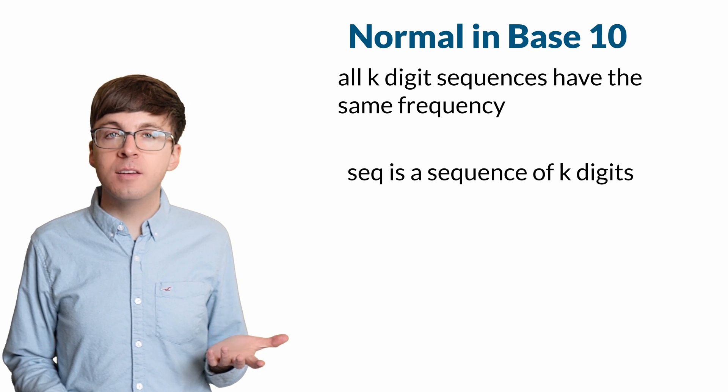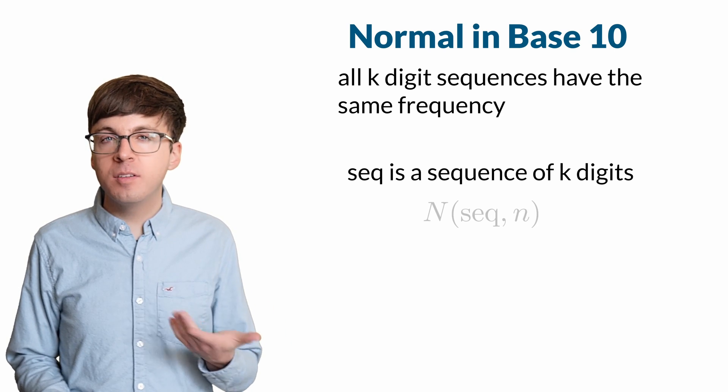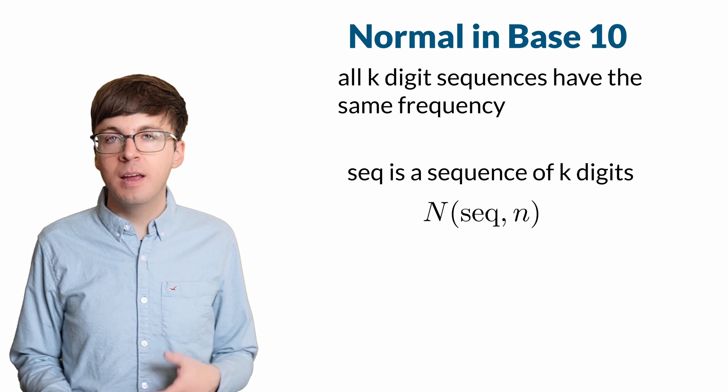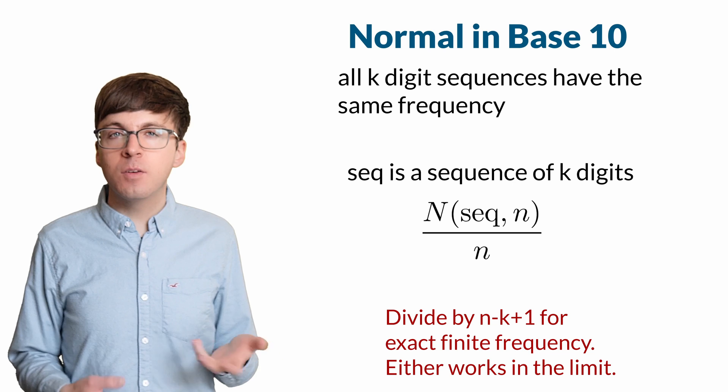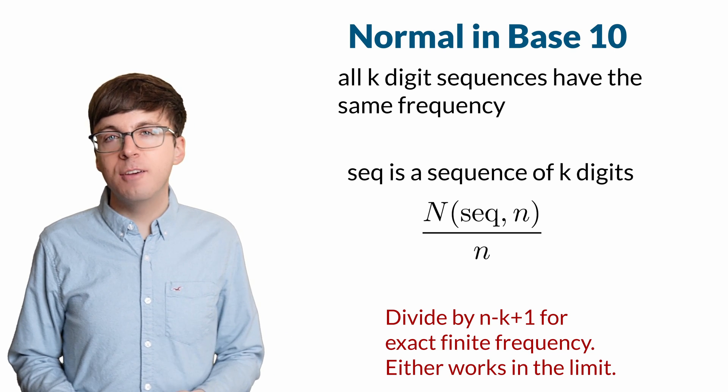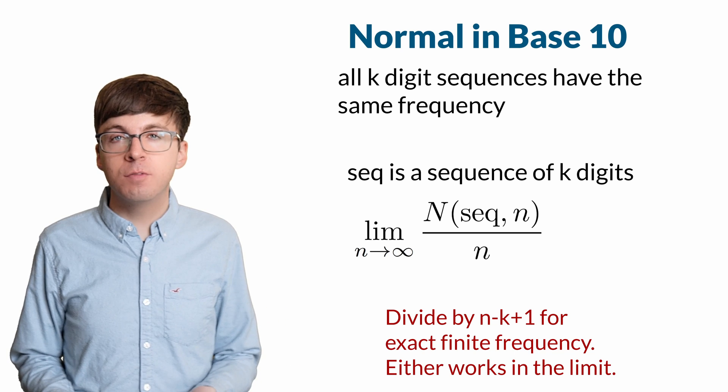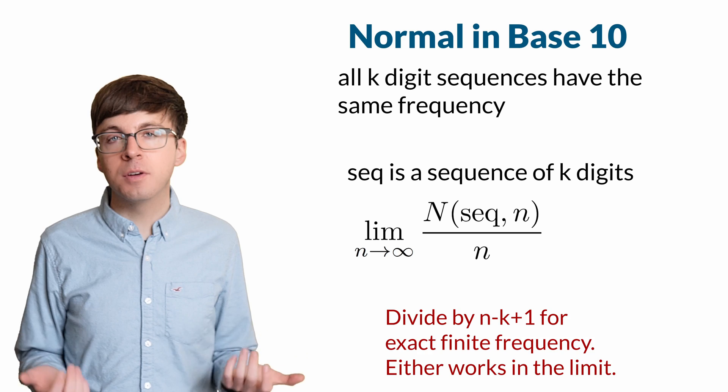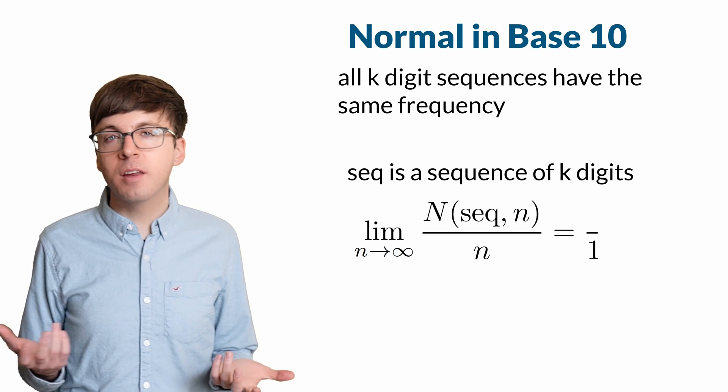Say we have a sequence of k digits. If we count how many times the sequence shows up in the first n digits of the number and divide that by n, then we get the frequency of the sequence in the first n digits. If we take the limit as n goes to infinity, then we get the frequency of the sequence in the entire number. This should equal 1/10^k.